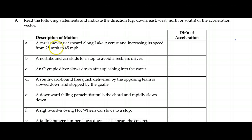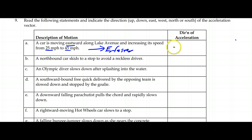The car is going from 25 to 45, so the number is getting larger and it's moving east — the vector direction is east. It's getting faster. In order to get faster, the direction of acceleration should agree with the velocity. Therefore, the acceleration should be to the east.